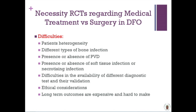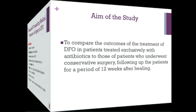Why do we not have many publications regarding this kind of treatment? In my opinion, because patients have high heterogeneity — there are different types of bone infection, and the presence or absence of peripheral vascular disease or soft tissue or necrotizing infection could influence outcomes. There are also difficulties with the availability and validation of different diagnostic tests, ethical considerations, and varying health conditions. For this reason, we felt it necessary to conduct a randomized controlled trial demonstrating the efficacy of treating patients with antibiotics or conservative surgery.